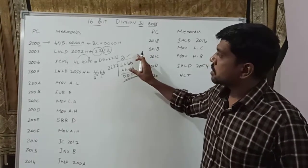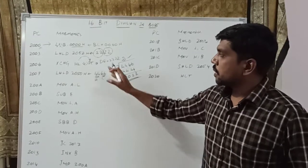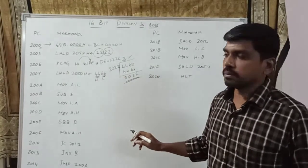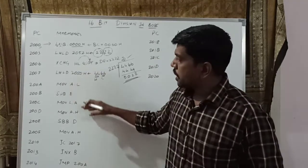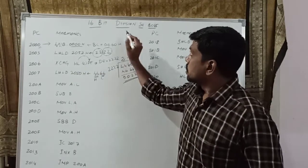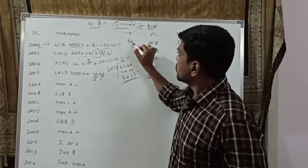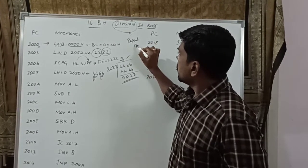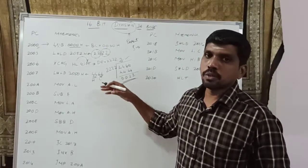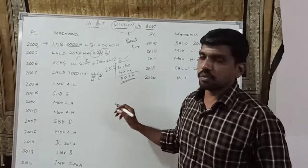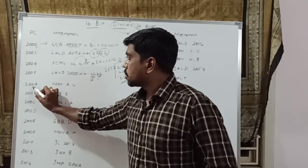After loading the two values, we apply the subtraction function. The division function means repeated subtraction. So how many iterations you want to perform — that determines the division function. The next instruction is at memory location 2008H.